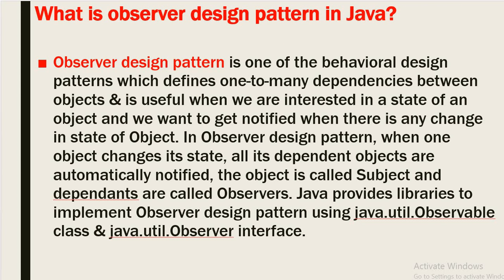What is observer design pattern in Java? Observer design pattern is one of the behavioral design patterns which defines a one-to-many dependency between objects and is useful when we are interested in the state of an object and want to get notified when there is any change in the state. When one object changes its state, all its dependent objects are automatically notified. The object is called the subject and dependents are called observers. Java provides libraries to implement observer design pattern using java.util.Observable class and java.util.Observer interface.